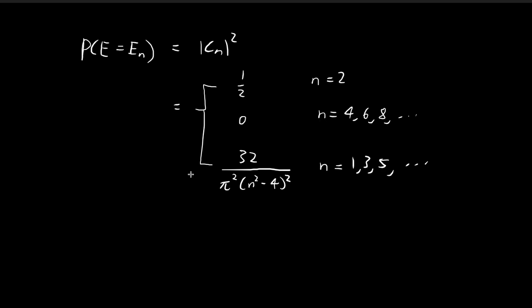Now in part B we want to find the next most probable energy level. Since this is the most probable energy level, for the next most probable energy level we're going to turn to this term over here. We want to find an n such that this term is maximized.